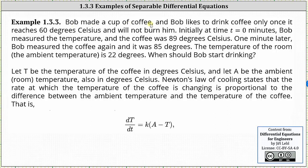To begin, Bob made a cup of coffee. Bob likes to drink coffee once it reaches 60 degrees Celsius, so it will not burn him. Initially, at time t equals zero minutes, Bob measured the temperature and the coffee was 89 degrees Celsius. One minute later, Bob measured the coffee again and it was 85 degrees. The temperature of the room, the ambient temperature, is 22 degrees. When should Bob start drinking?